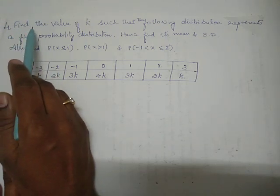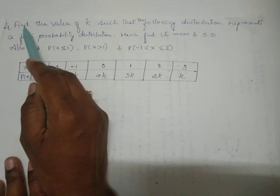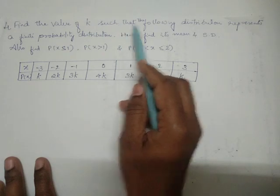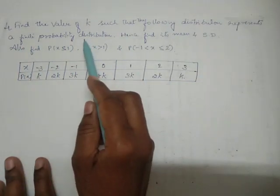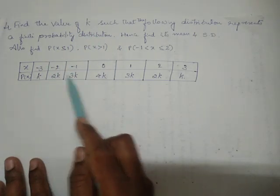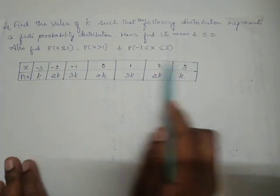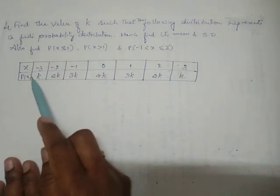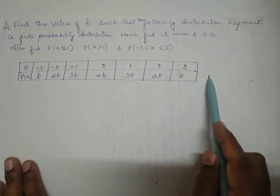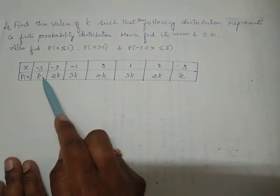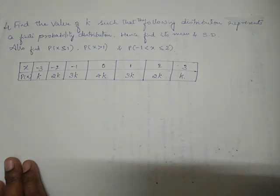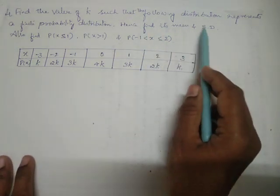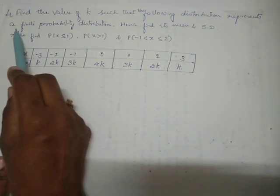The fourth problem is: find the value of k such that the following distribution represents a finite probability distribution. We need to find the value of k such that the given distribution is a finite probability distribution — that means the addition of all values will be equal to one, and each and every value will be greater than or equal to zero.